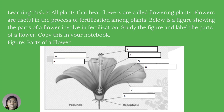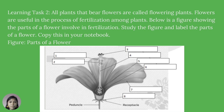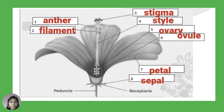For our second learning task: all plants that bear flowers are called flowering plants. Flowers are useful in the process of fertilization among plants. Study the figure and label the parts of a flower. The correct answers are: anther, filament, stigma, style, ovary, ovule, petal, sepal, pedicel, and receptacle.